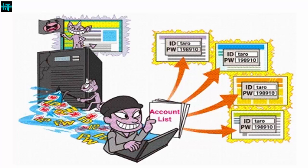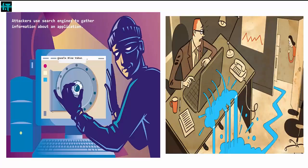Information leakage is an application weakness where an application reveals sensitive data, such as technical details of the web application environment or user-specific data. Sensitive data may be used by an attacker to exploit the target web application, its hosting network, or its users.